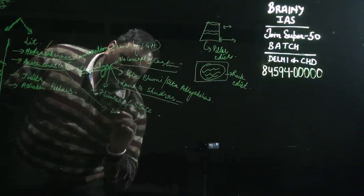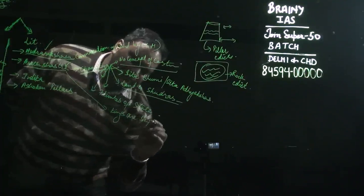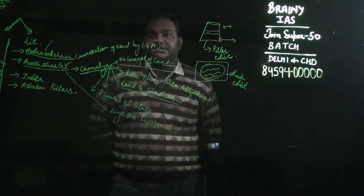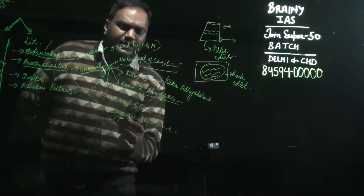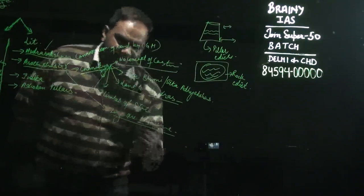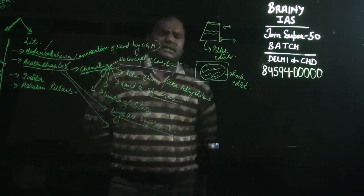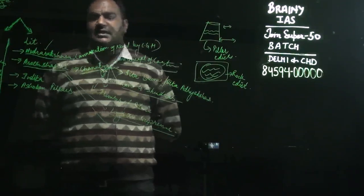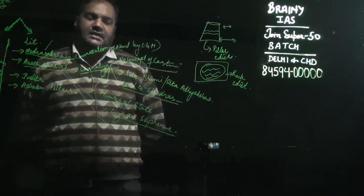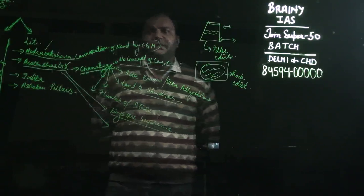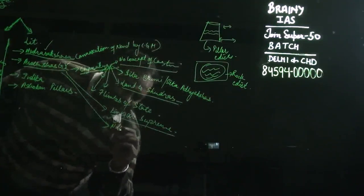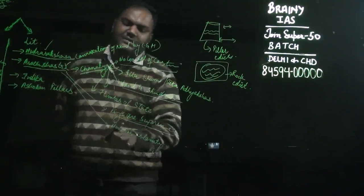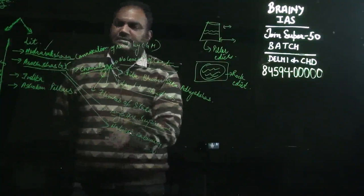Arthashastra also states that kings are the supreme power and that the king's authority can never be checked. One very important point for examinations is that in the Arthashastra, there is not even a mention of any king or any dynasty by name. There is also mention of relief measures to be taken in case of natural calamity.